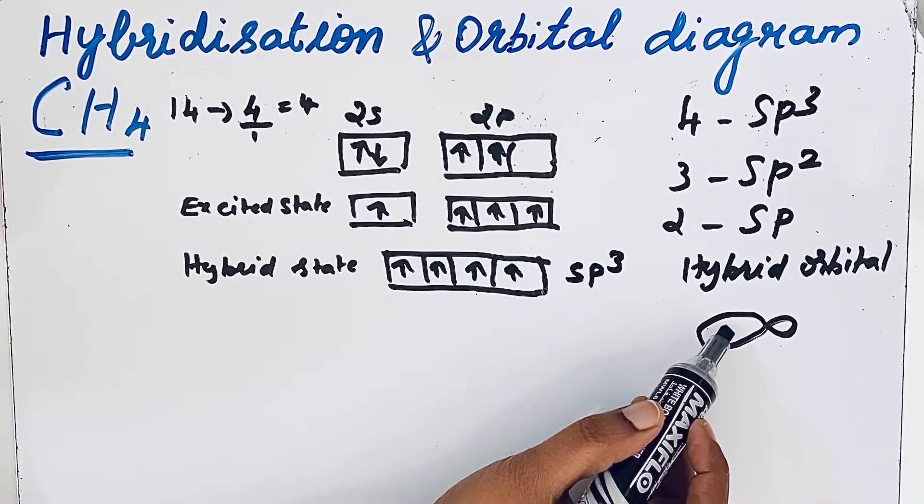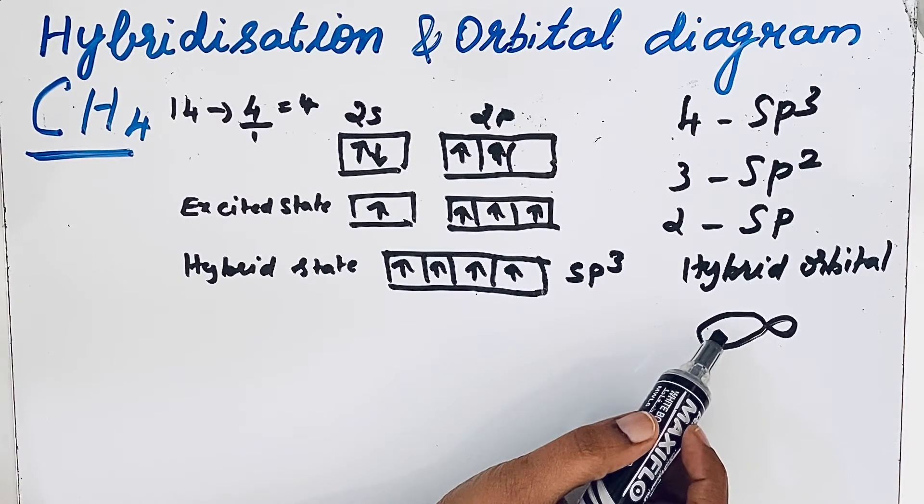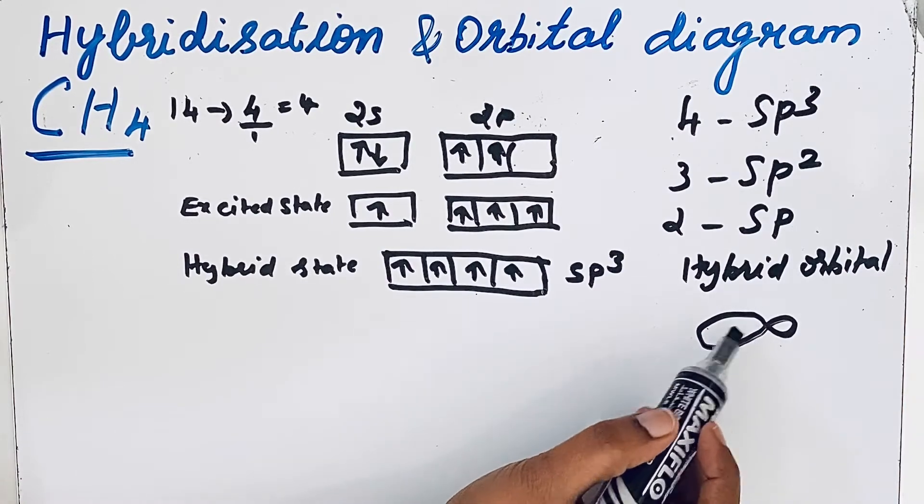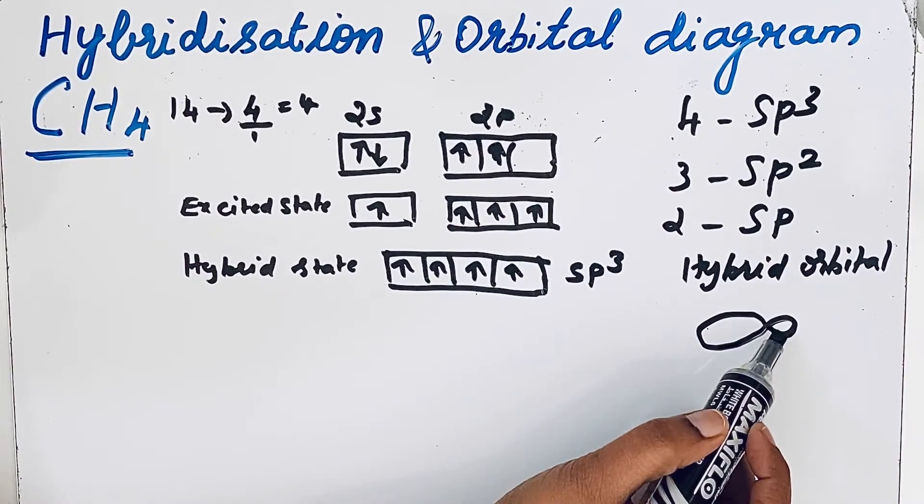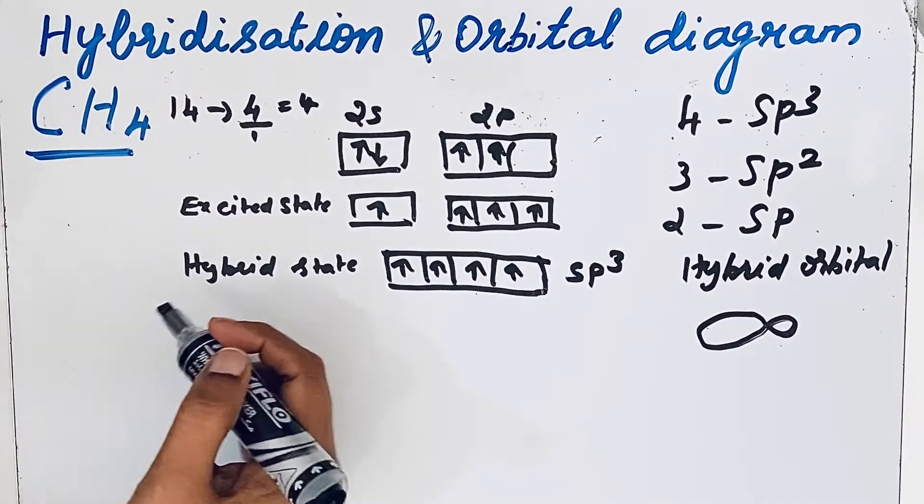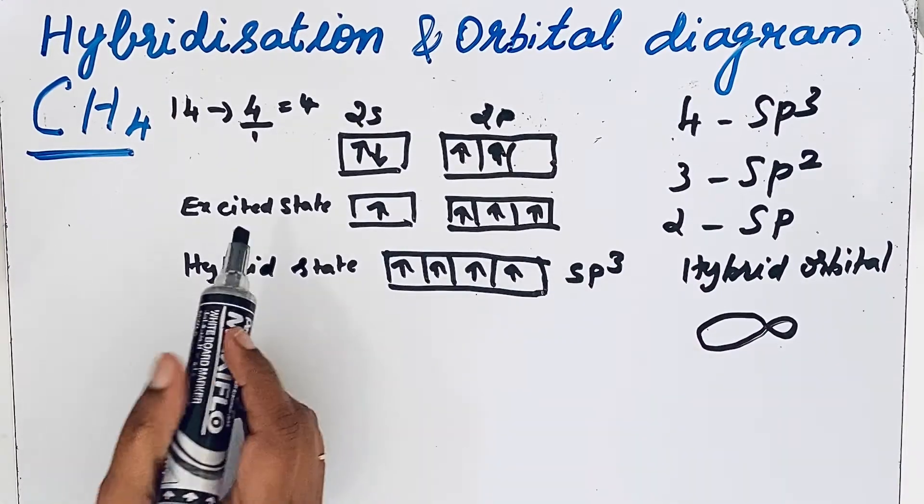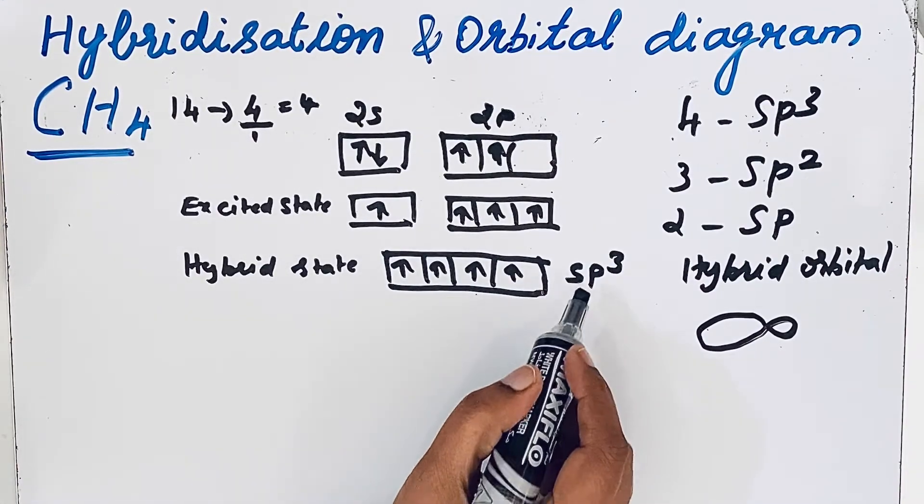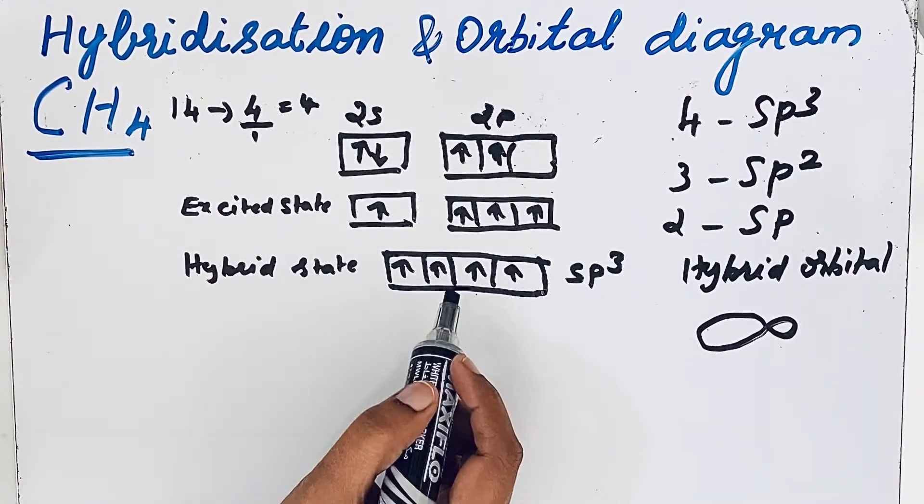You can see that the shape of that hybrid orbital is like that: one loop is little bigger and another loop is smaller. So we know that hybridization is sp3 hybridization. Carbon in this compound can form sp3 hybridization.